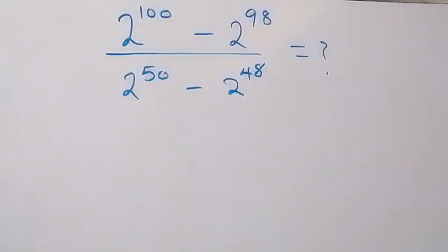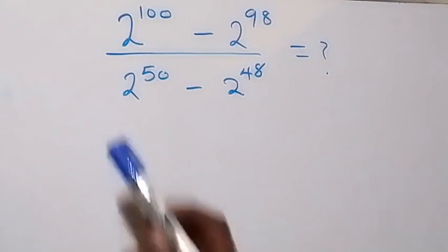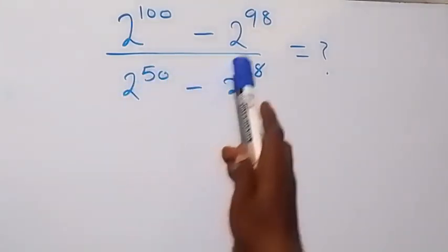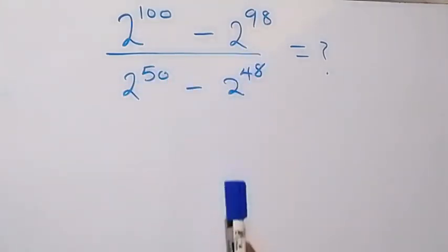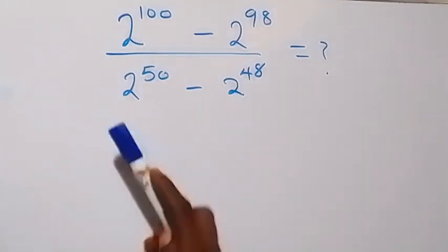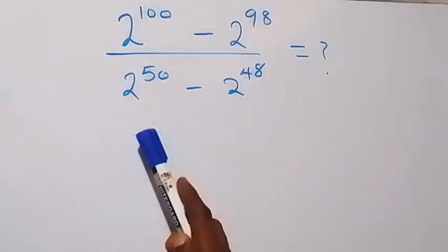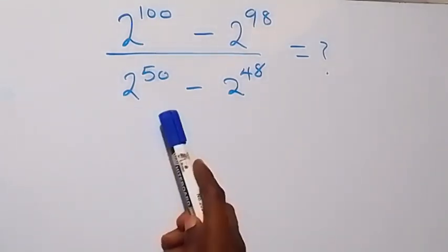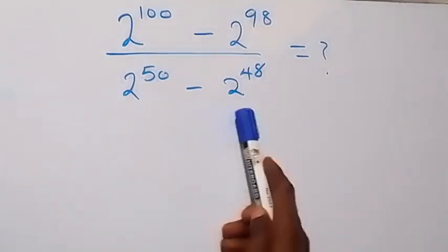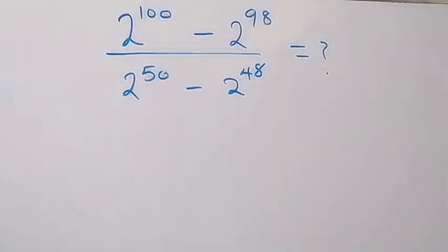Hello, you are welcome. How to solve this nice exponent math problem. We have 2 raised to power 100 minus 2 raised to power 98, over 2 raised to power 50 minus 2 raised to power 48.